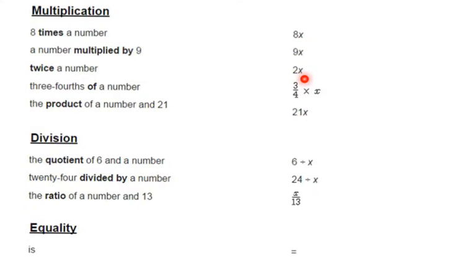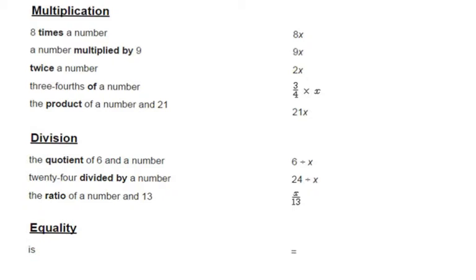Some words that mean multiplication are: times, multiplied by, twice (which means multiply by two), 'of' — that tiny word means to multiply, don't miss that one — and product. Some words that mean division are: quotient, divided by, and ratio. Words that mean equality are: 'is' — that's another little word that's easy to miss, but it just means to write the equal sign.